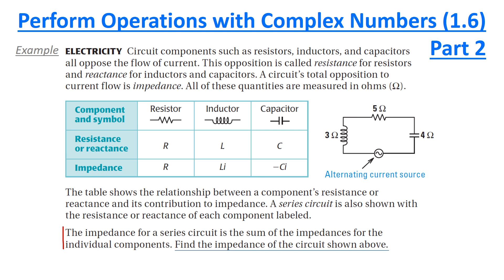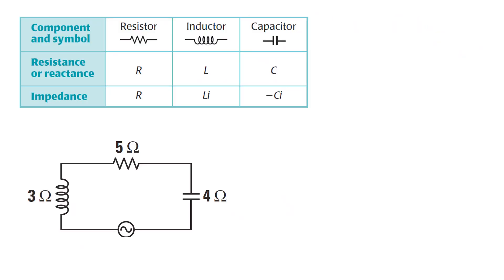We're also told that the impedance for the circuit is the sum of the impedances for the individual components. Here's a better view of all that information. Now just match everything up as you see it. The inductor over here is L, and matching up the symbols, this symbol here is the resistor, and we have a capacitor.